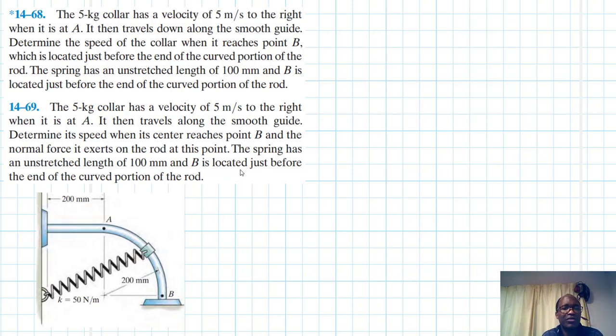The spring has a stretched length of hundred millimeters and B is located just before the end of the curved portion of the road. The second problem also reads more or less the same, and we have been asked to determine its speed when it reaches point B as well as determining the normal force it exerts on the road at this point.